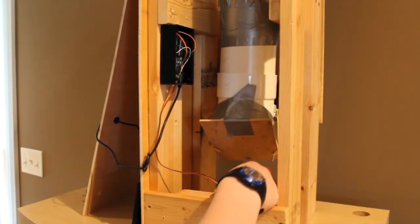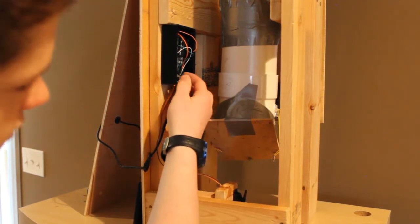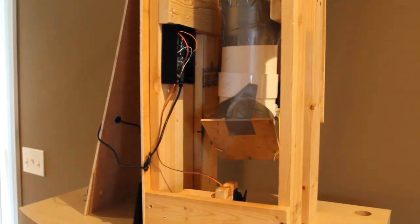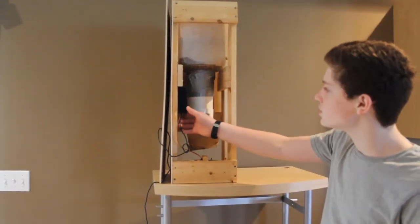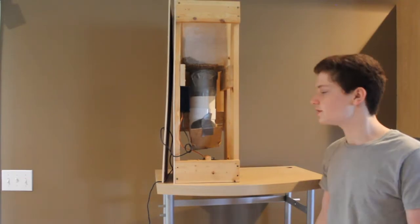This flap is controlled by this motor, which is controlled by this Arduino which runs a short program that tells this motor to move once a day and let the cat food out. The Arduino in this box runs on a short code which you can find in the description below.